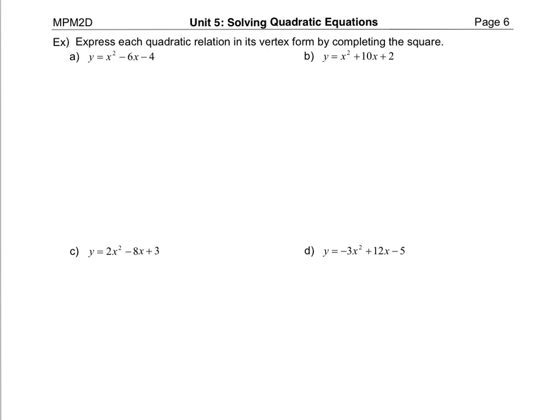We're going to express each quadratic relation in its vertex form by completing the square. My first example has a lead coefficient of one — the a value is one — so I don't have to worry about factoring the a value out of the first two terms. I'll jump right into step two, which is taking half of the coefficient of the x term.